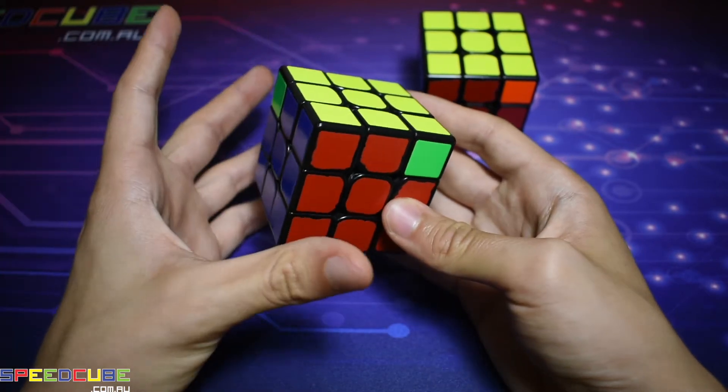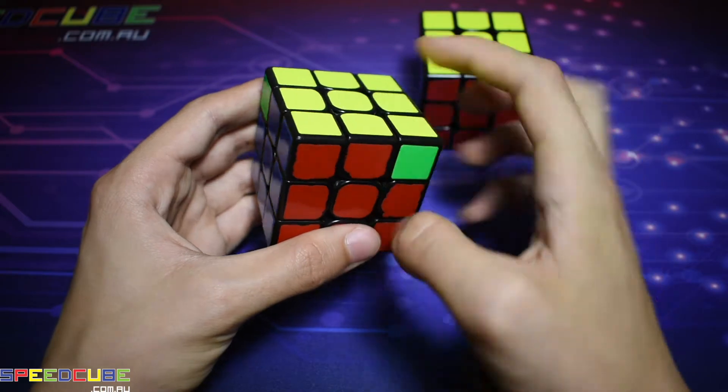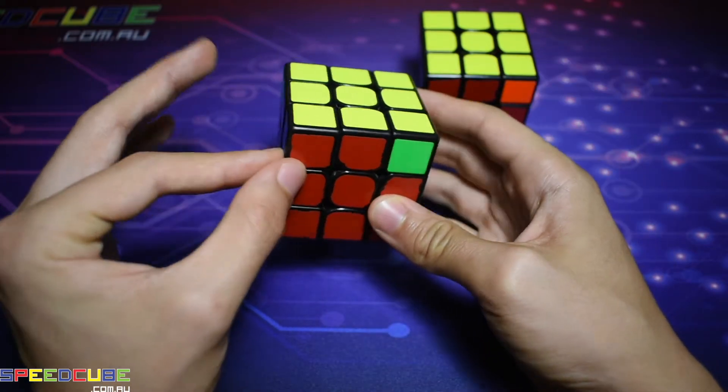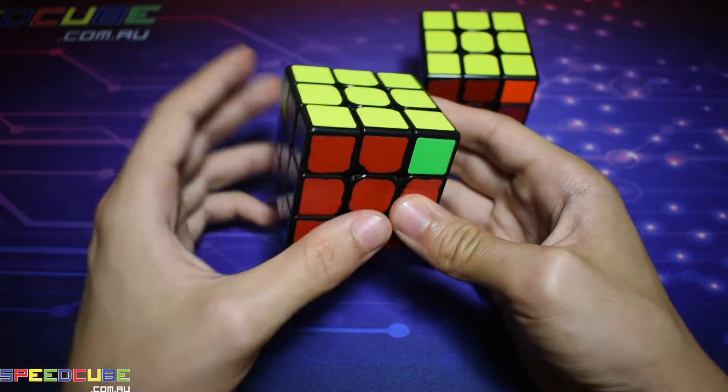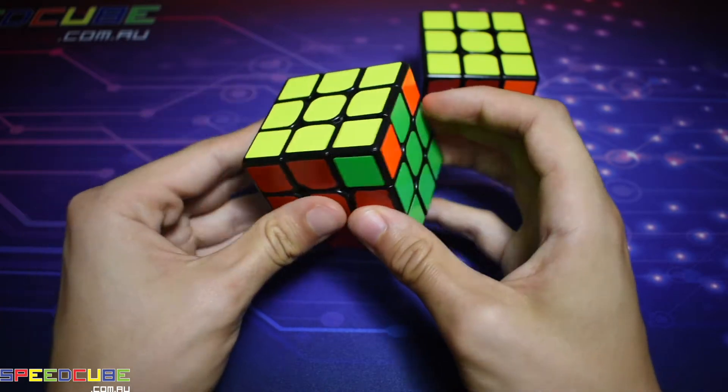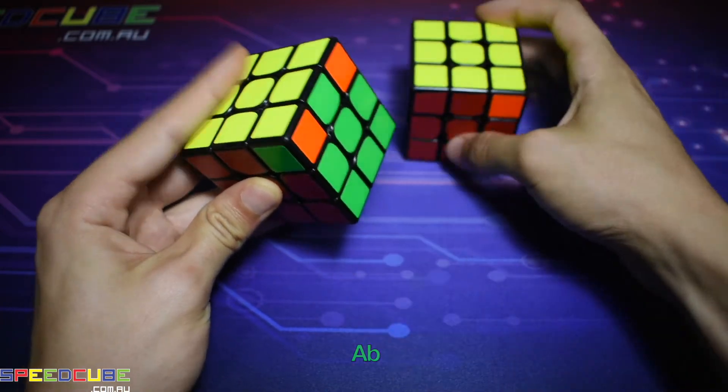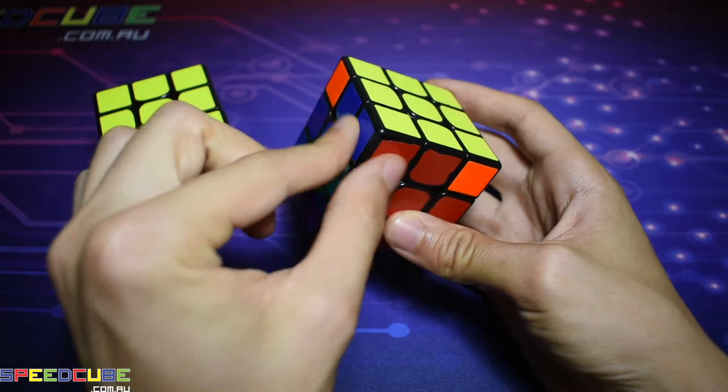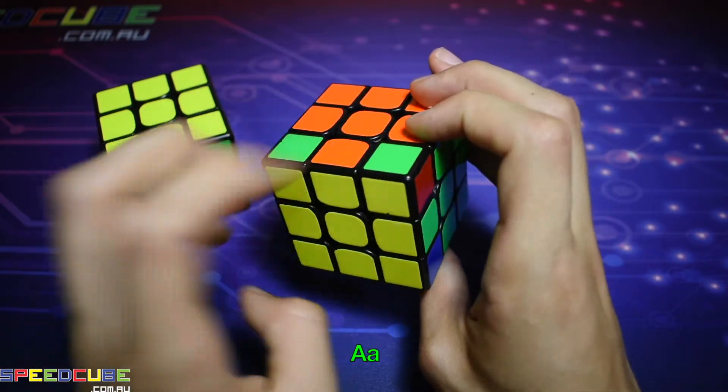So to solve these ones you want to hold the 2x2 block in the bottom left corner like this and there will be two cases of A perms. The first one is that the bar will be over on the right and the second case holding this here is that the bar will be at the back.